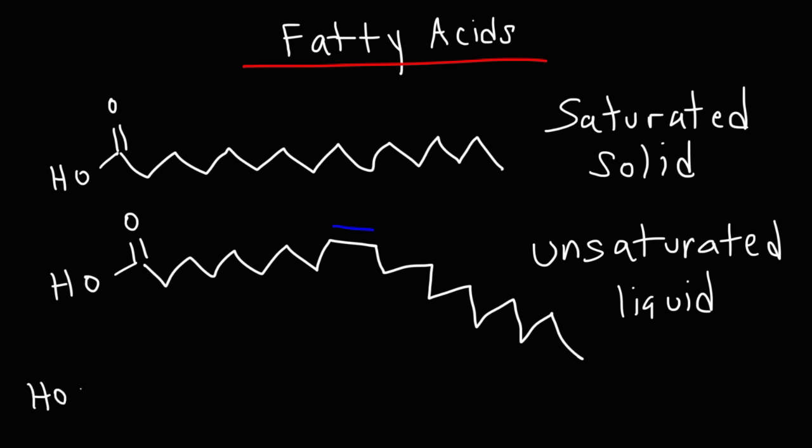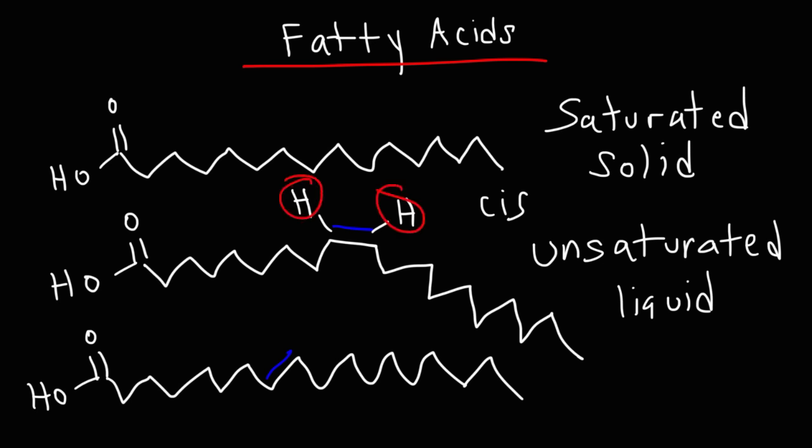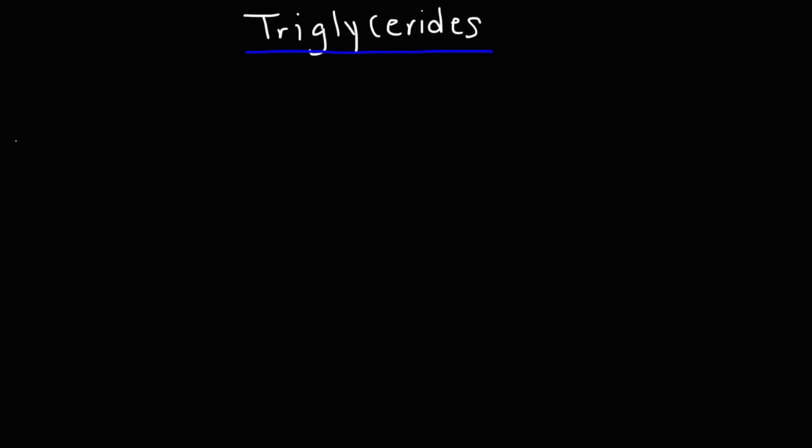Now, another type of unsaturated fatty acid are the trans fatty acid. In this configuration, we have a cis double bond. Because the hydrogen atoms across the carbons that are double bonded are on the same side of the double bond. In a trans fatty acid, the hydrogen atoms on the double bond are on opposite sides. So that's an example of a trans unsaturated fatty acid.